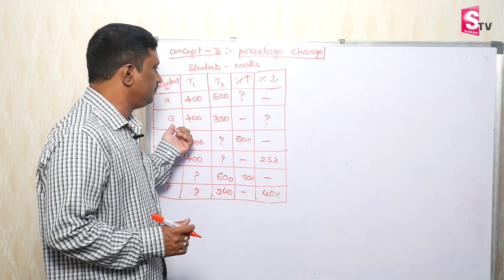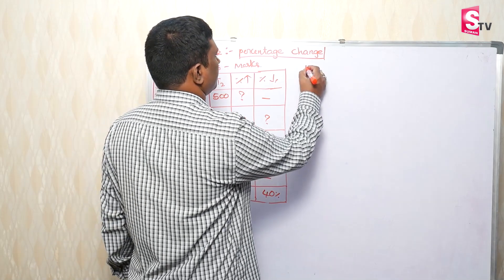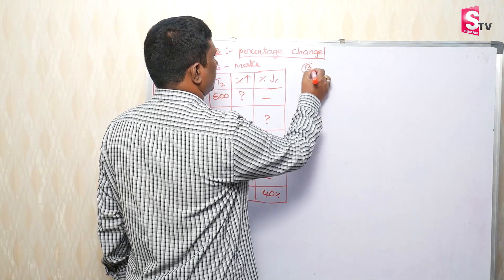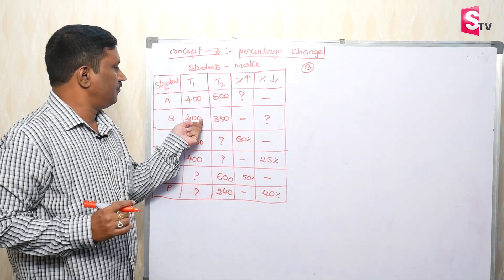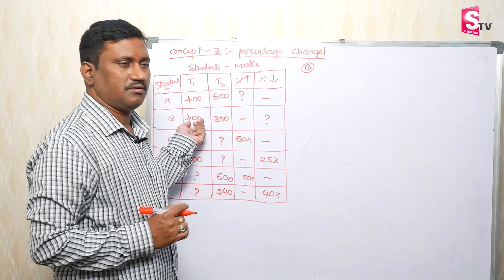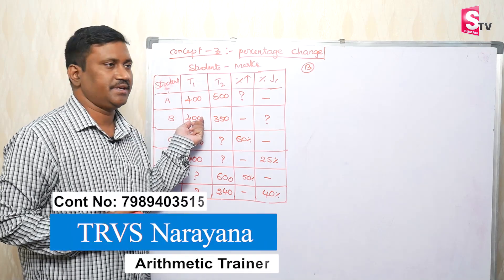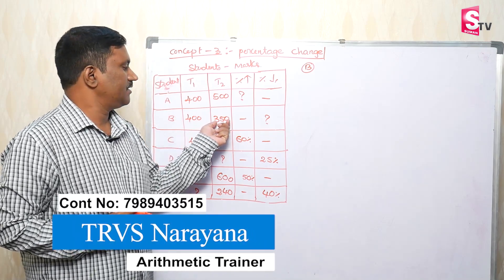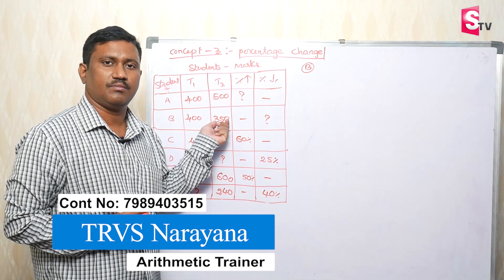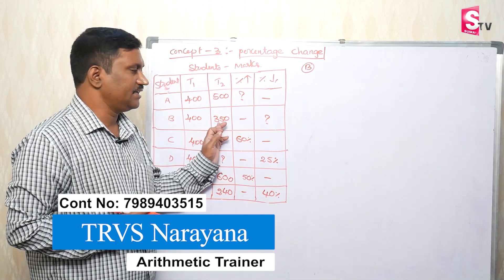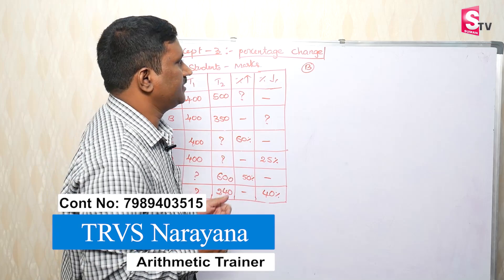Next, compare B student to B student. First test: 400 marks. Second test — B and A student — Rendo test, second test: 350. So the decrease is 50.